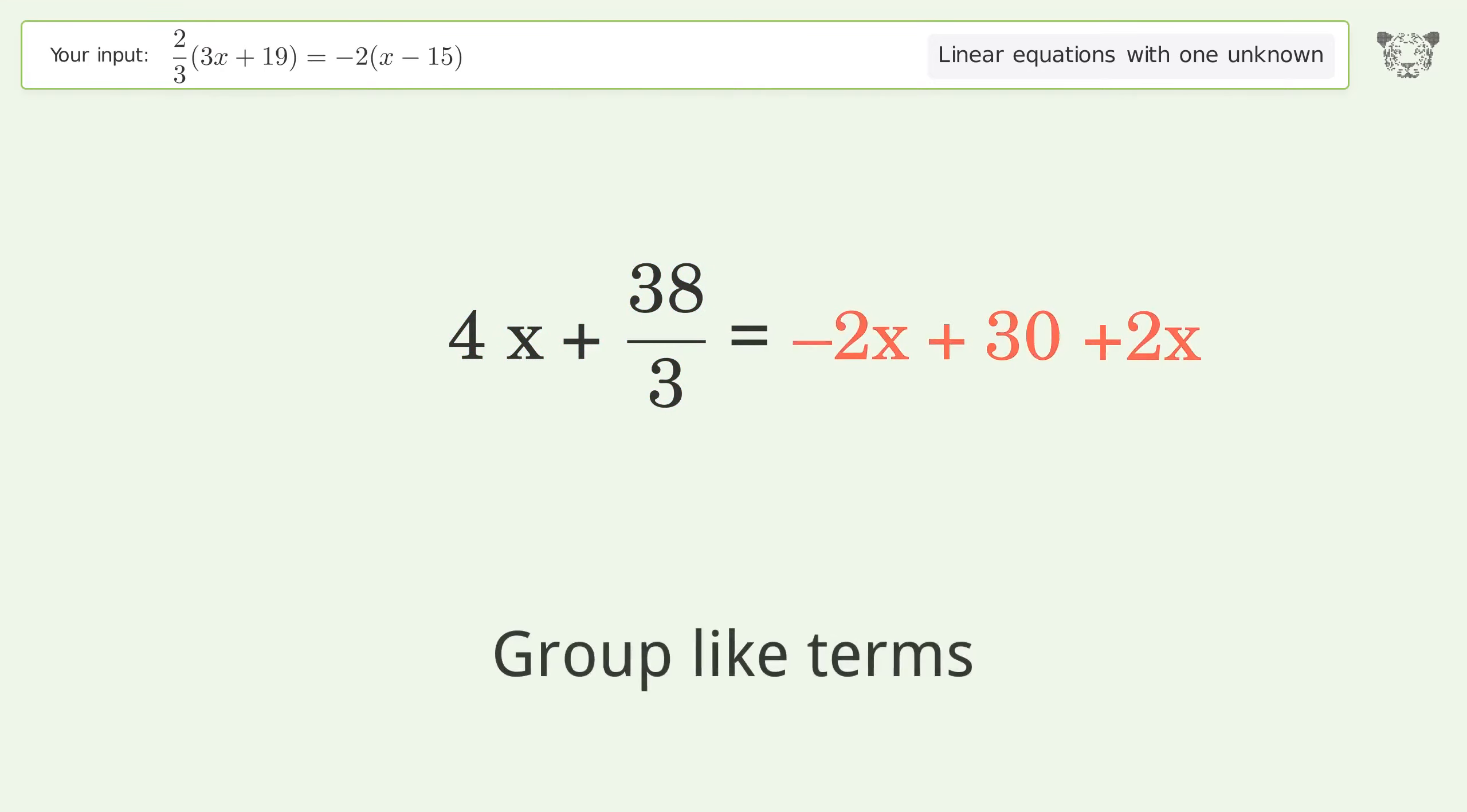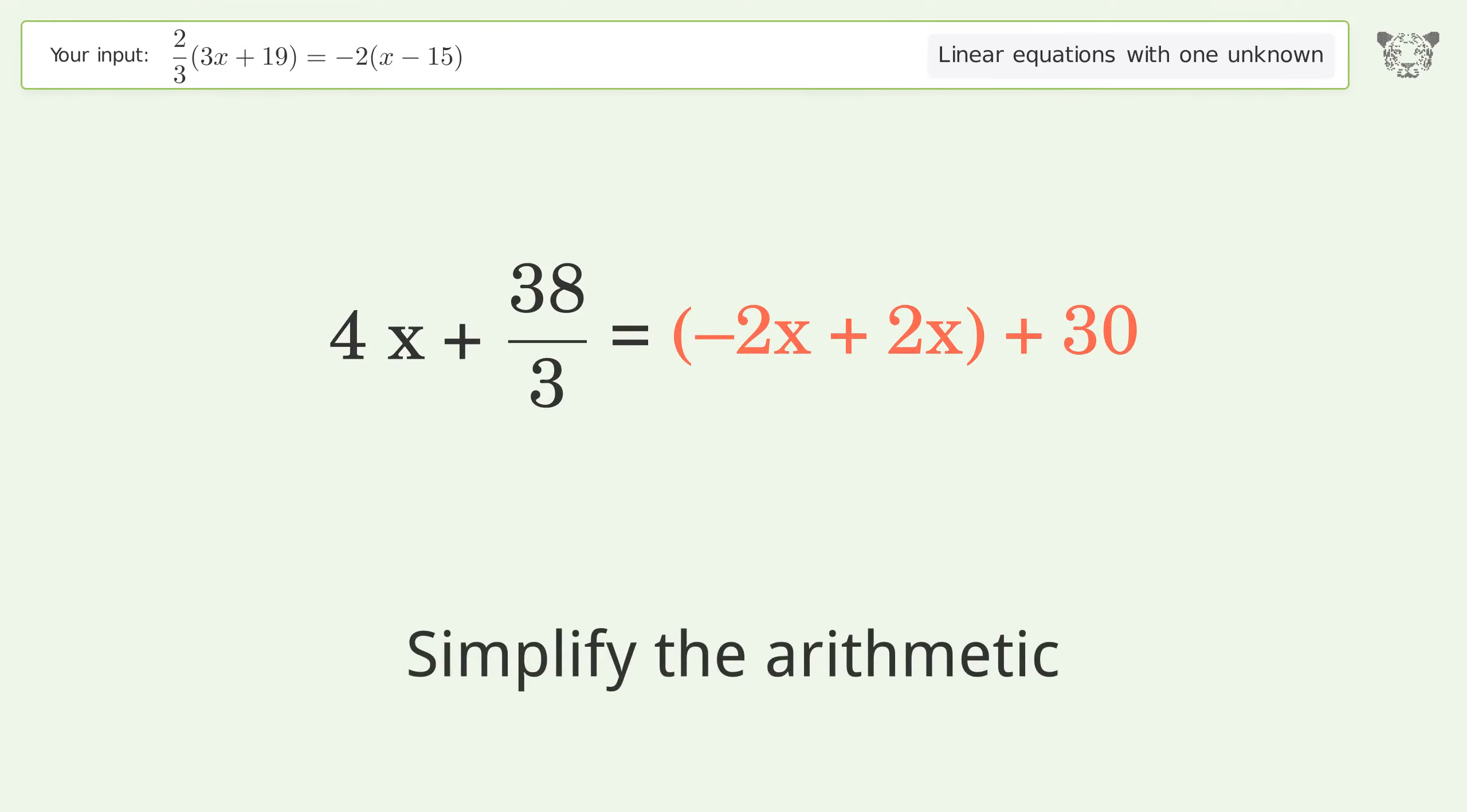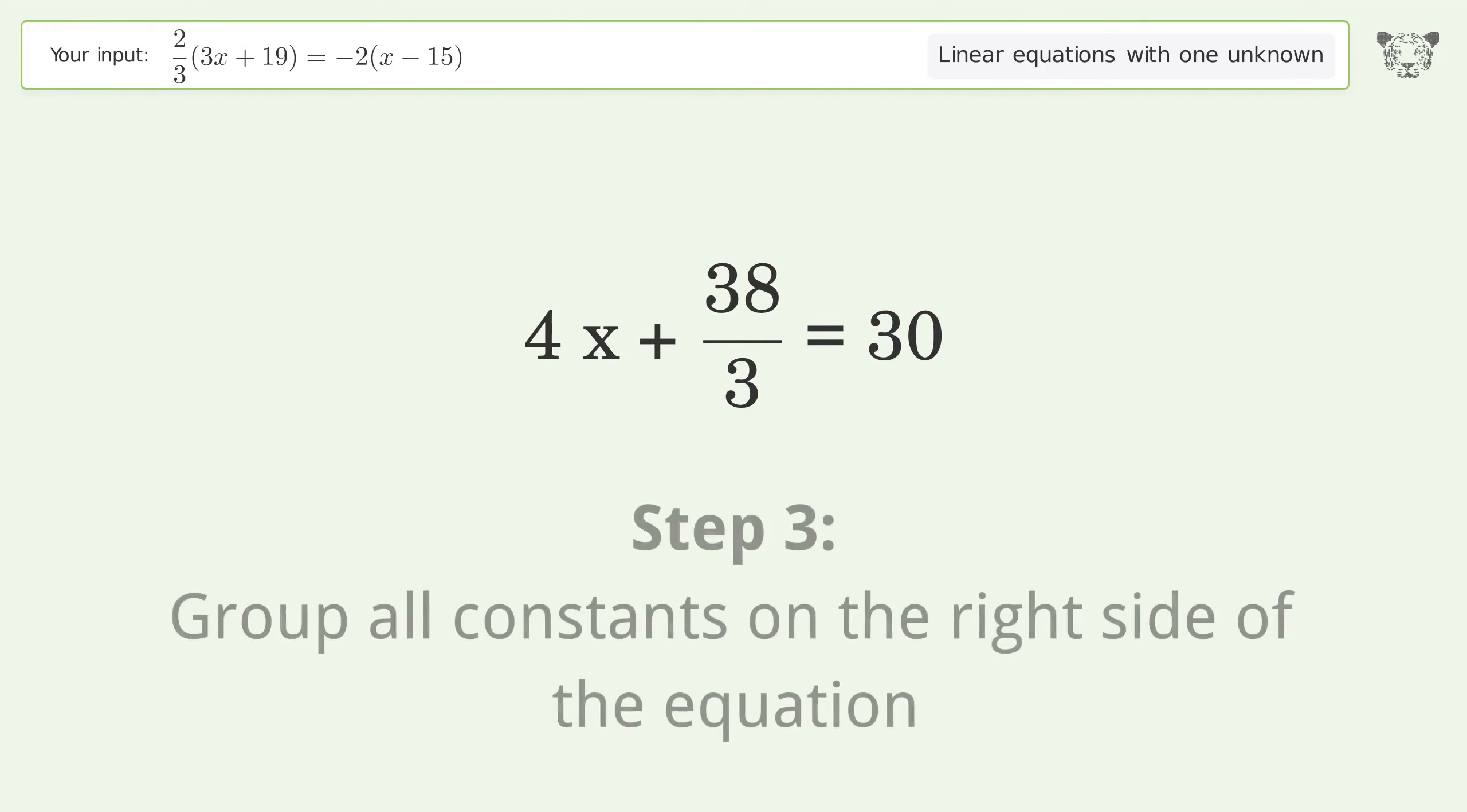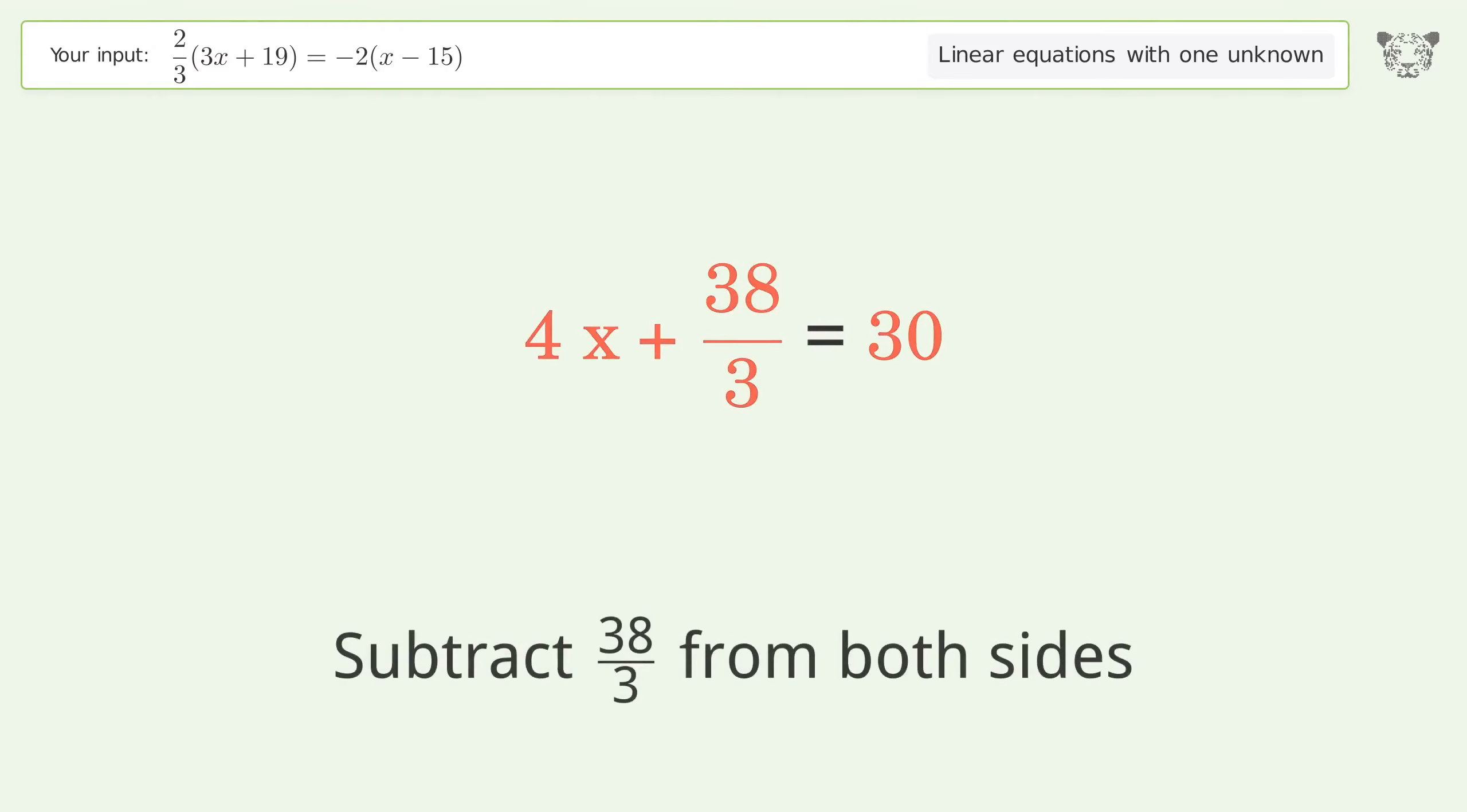Group like terms. Simplify the arithmetic. Group all constants on the right side of the equation. Subtract 38 over 3 from both sides.